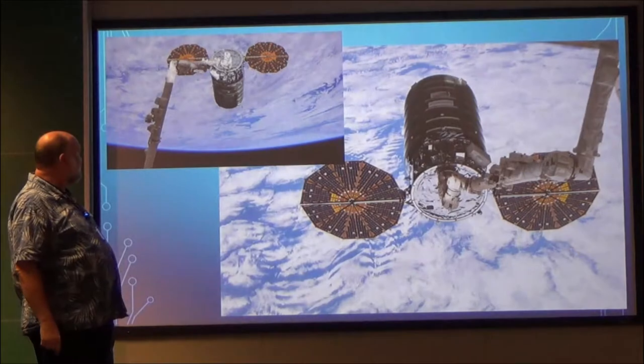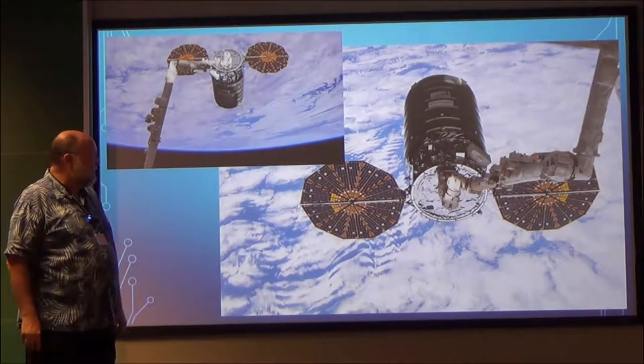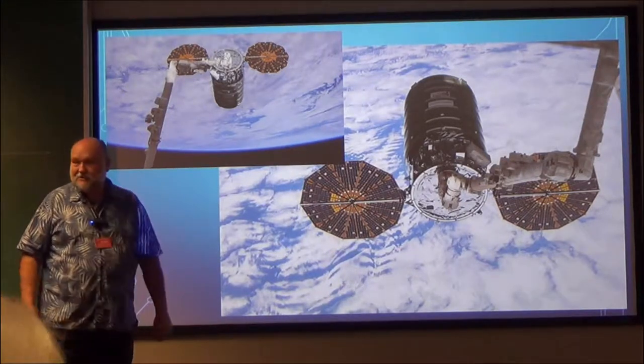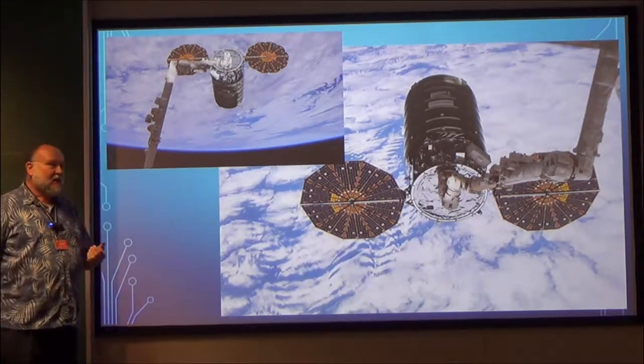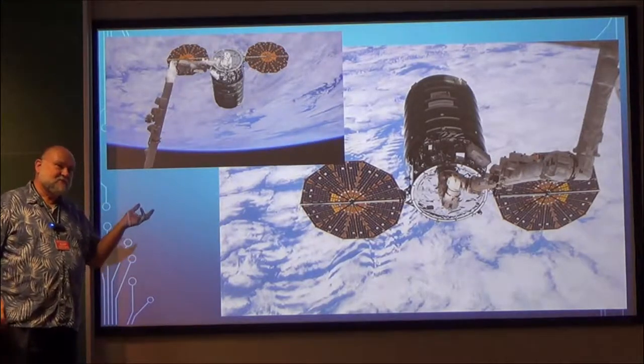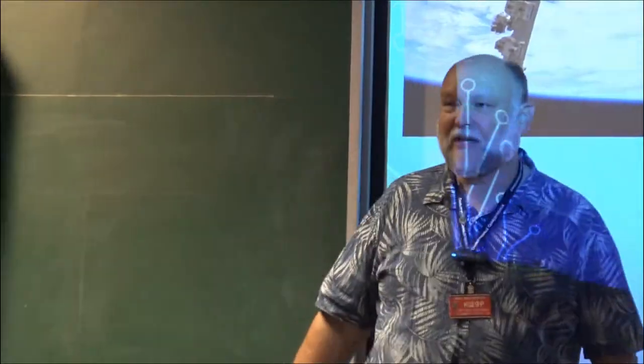That's what it looks like when it's being grabbed. They grab it with the Canadian arm and spin it around and dock it with the space station. Then they unload. And then the cargo, like CubeSats, sits around for a while. We sat on the space station for six or seven weeks.